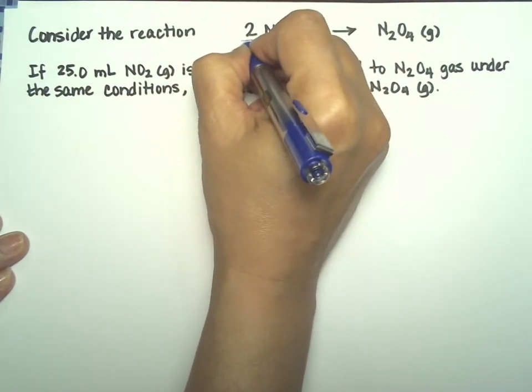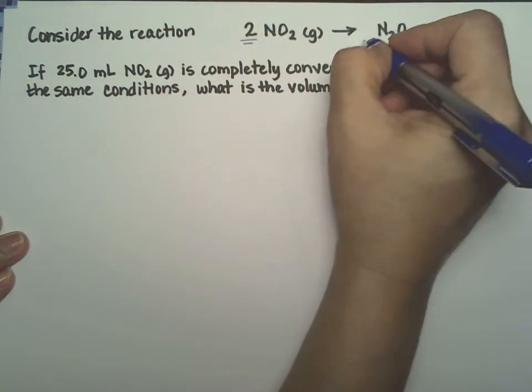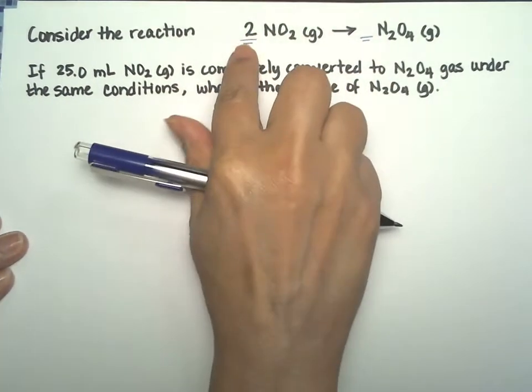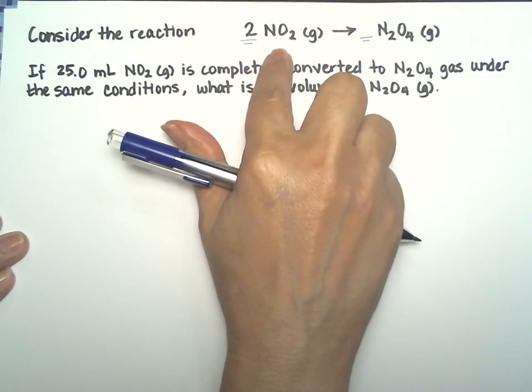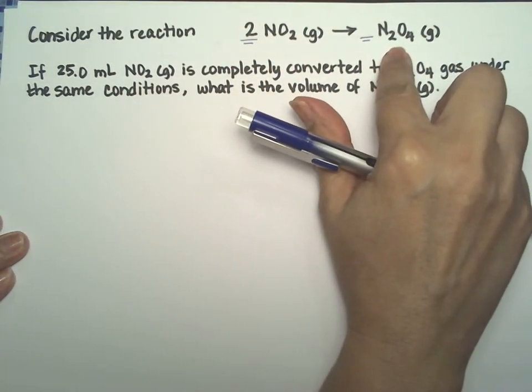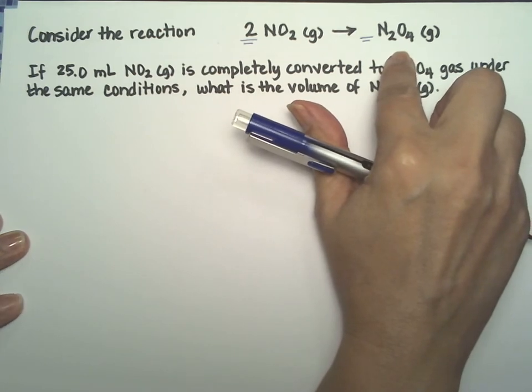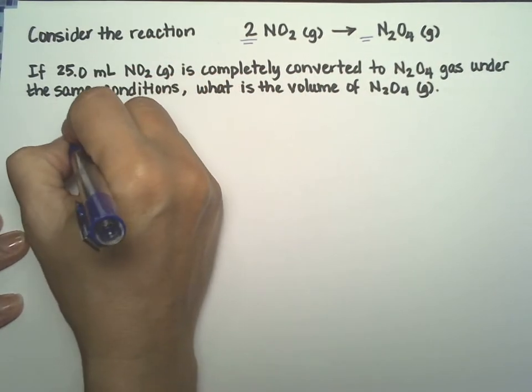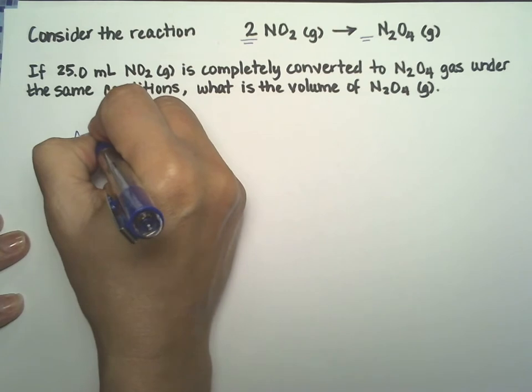And first, we're going to look at the equation itself, because two moles of the dioxide will actually only make one mole of the dinitrogen tetroxide. For this one, we're going to use Avogadro's law.